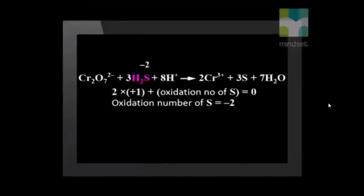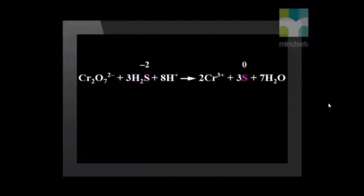If we look at the sulfur ions, the ions change from minus 2 to 0 on the product side. The sulfur has become more positive, which tells us it has lost electrons. And therefore, the sulfur has been oxidized.